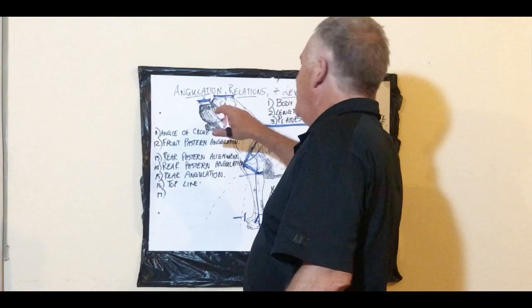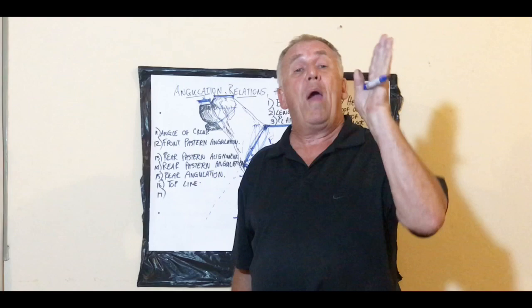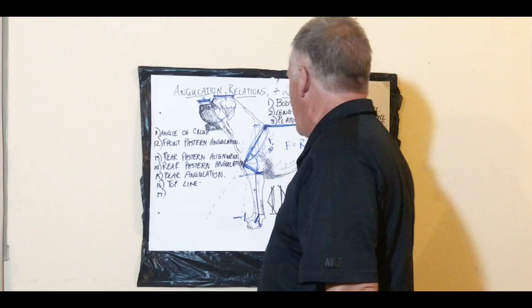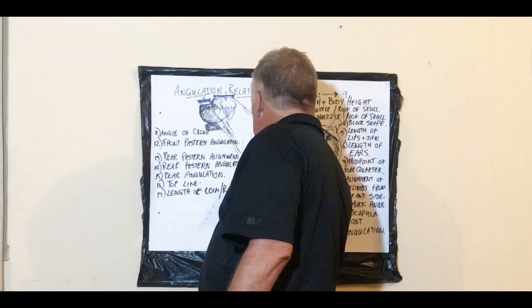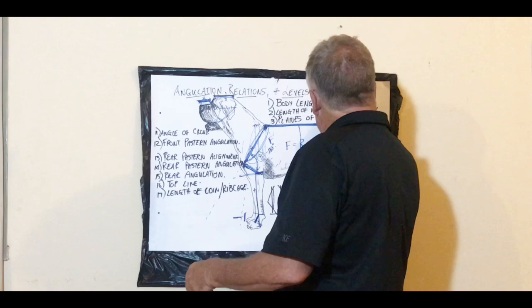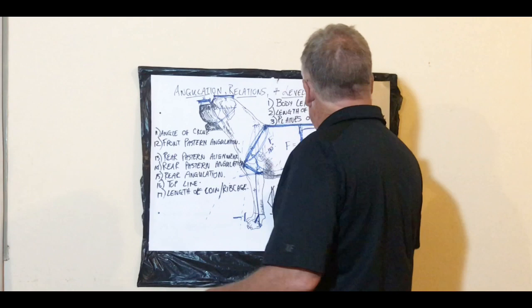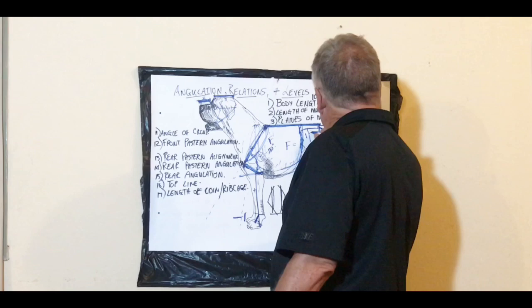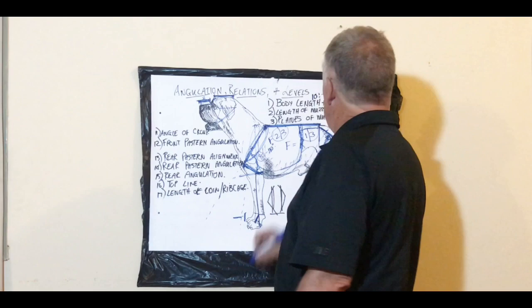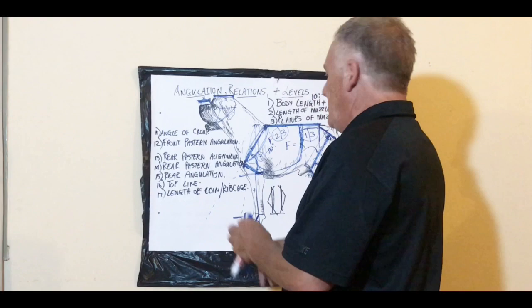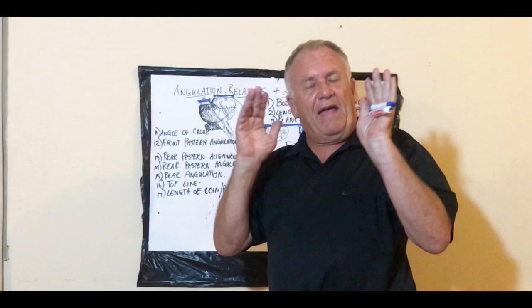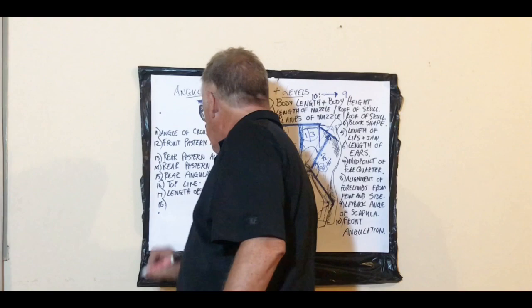Item 17 is the length of the loin versus the ribcage. The loin is the small section where only the spine supports the body — no ribs there. The relationship is: the loin should be one third and the ribcage two thirds. If you have that, you have a correct relationship. We're not talking about widths and musculature of the loin yet — that comes in the detailed video. This is overview material.